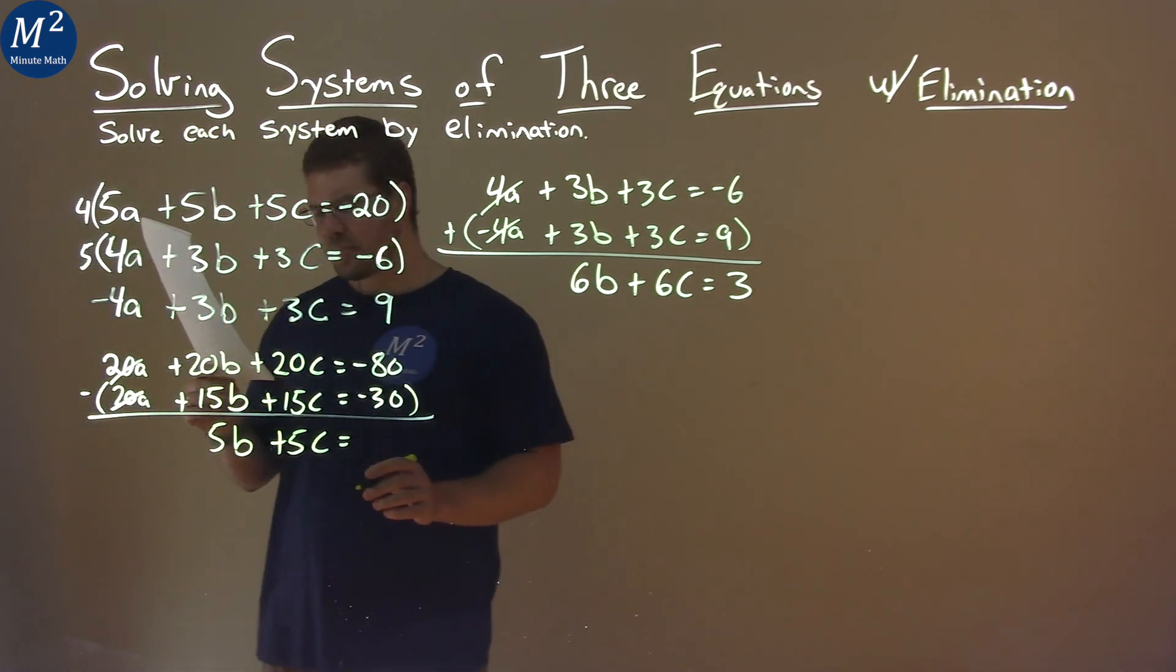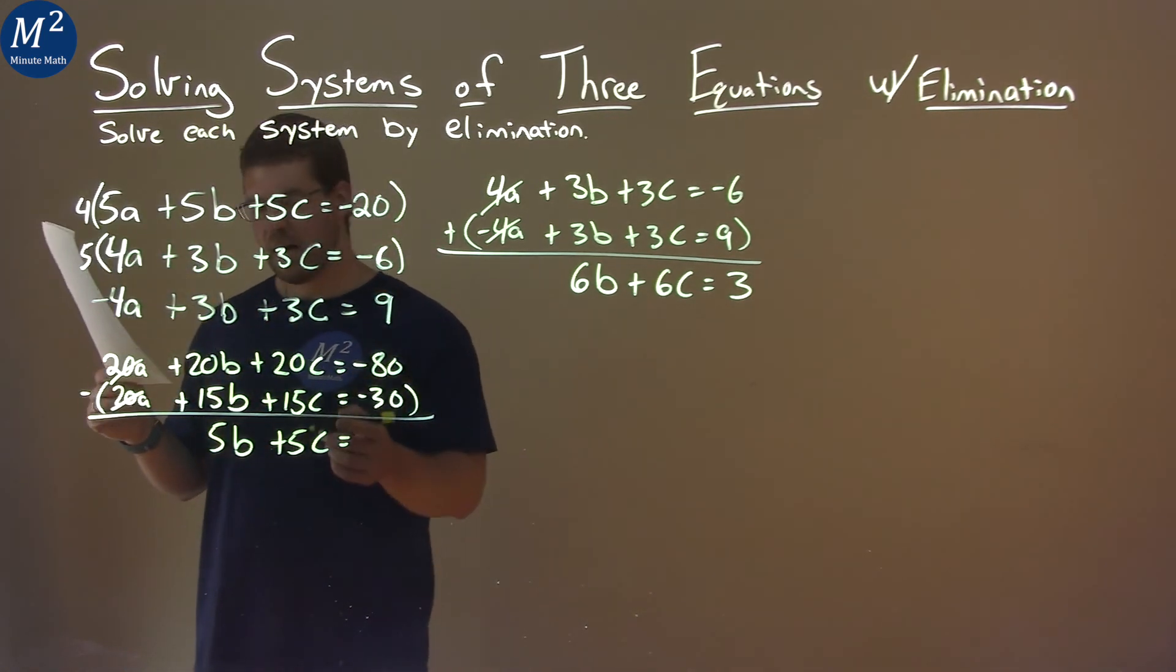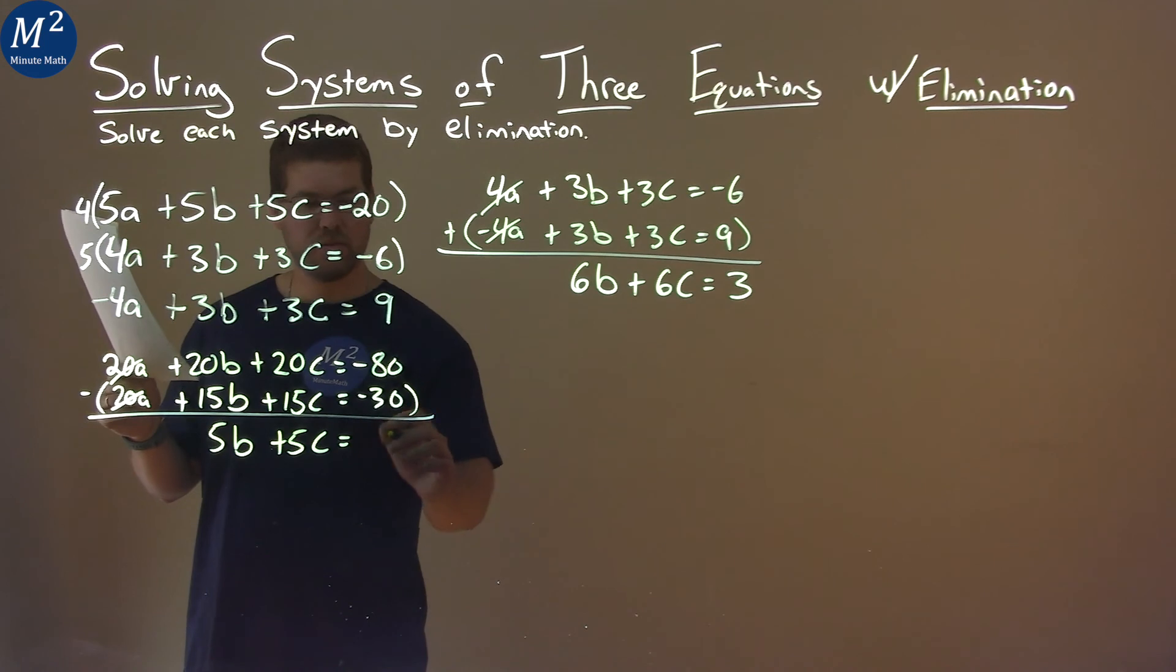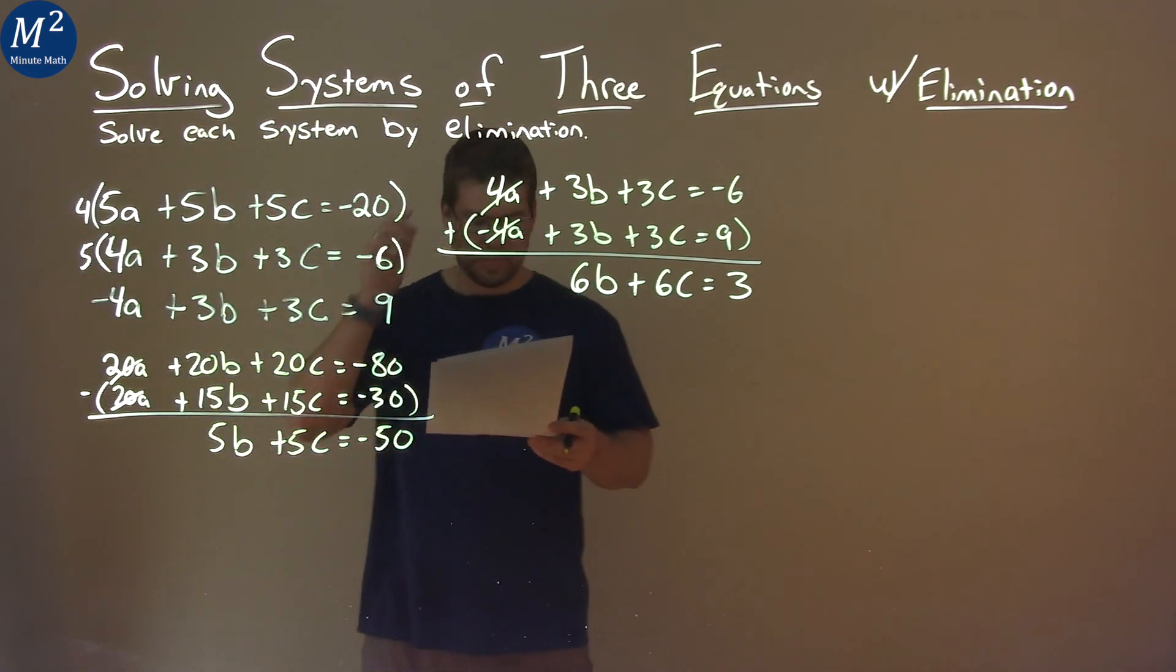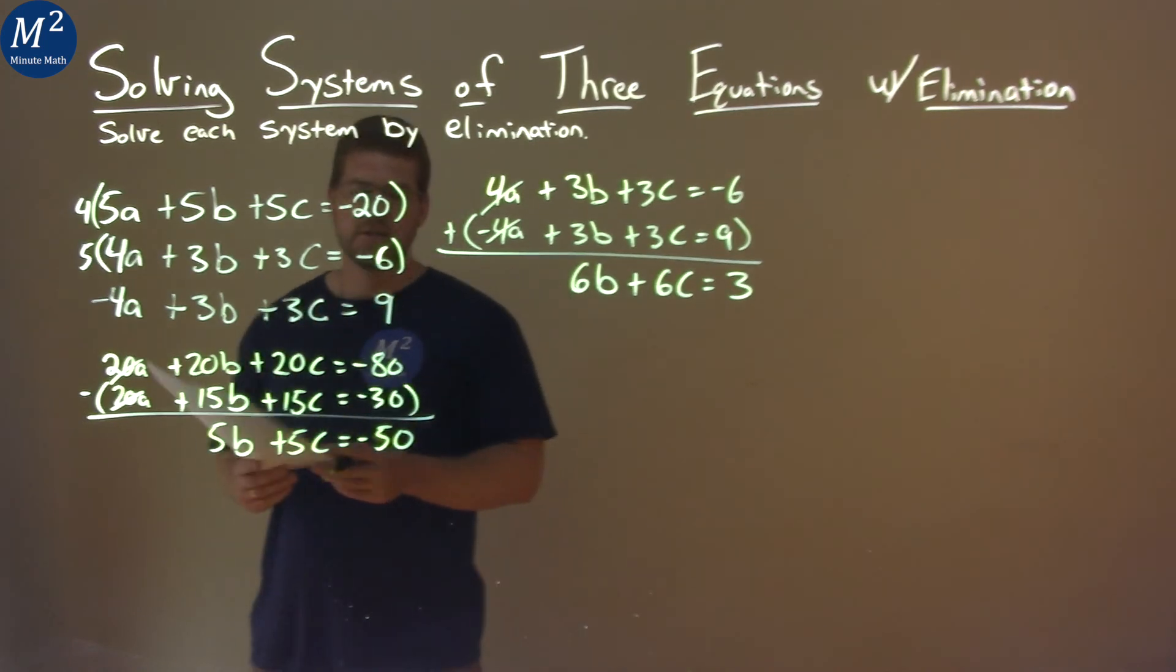And well, what does that equal? Negative 80 minus negative 30 is like adding positive 30, negative 50 here. Okay? Well, there's two equations here.